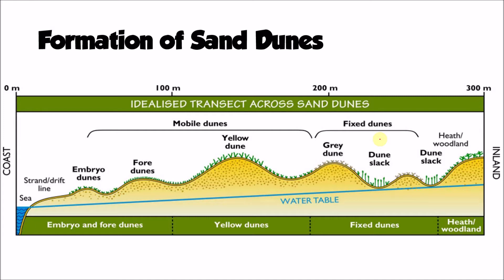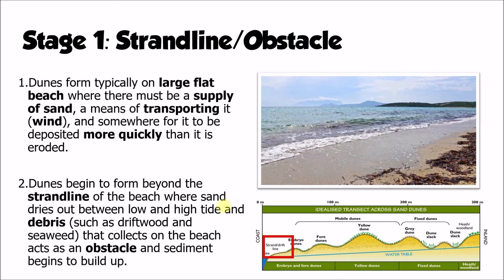Let's have a look now at the specific sequence that creates a typical sand dune system. Dunes need a certain set of conditions to form — this is why we don't find them on all beaches. We need that large flat beach so the sand can dry out, a constant supply of material, a means of transporting that sand by wind in the right onshore direction, and somewhere for it to be deposited more quickly than it's eroded, which is why obstacles and vegetation are important as they help speed up deposition.